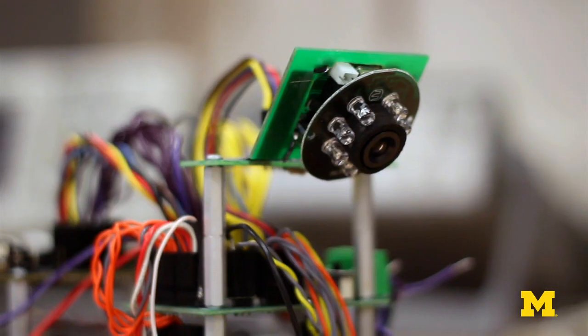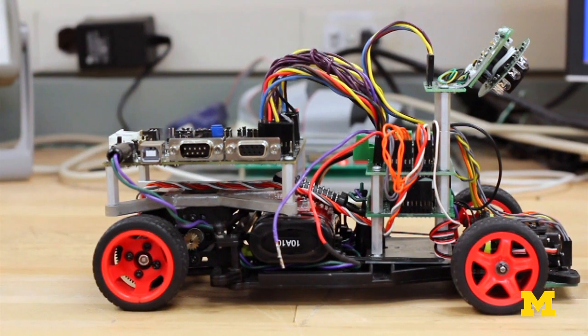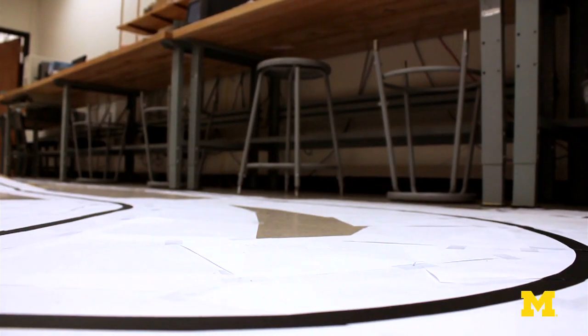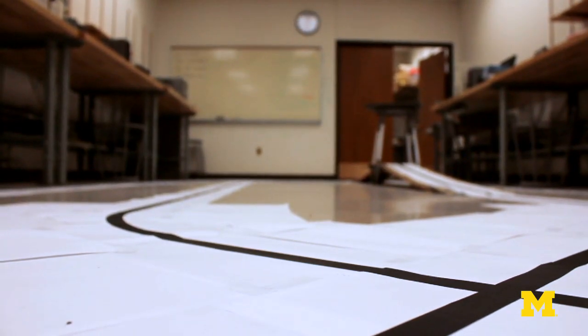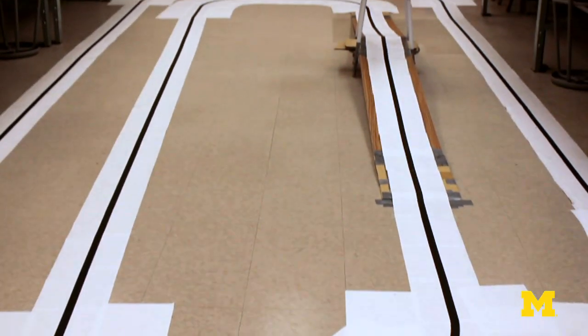The whole premise is you design a car, a little RC car, so that it can race autonomously around a track. They specify the track. In our case, it was a one-inch black line with one foot of white space on either side, and the objective is to stay on the track and get around as fast as possible without any penalties.